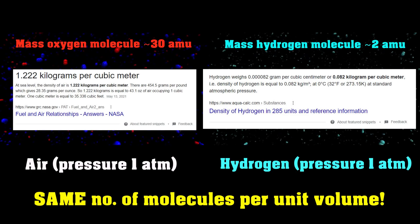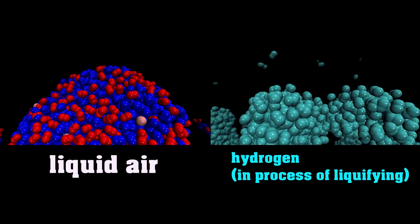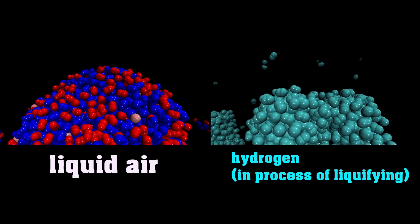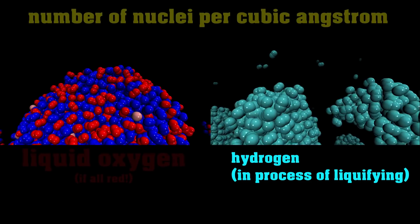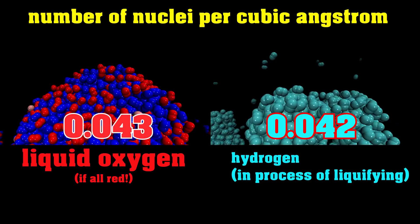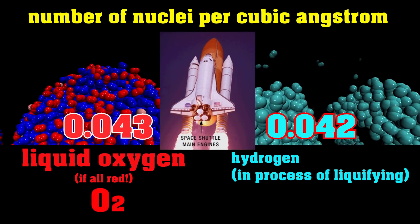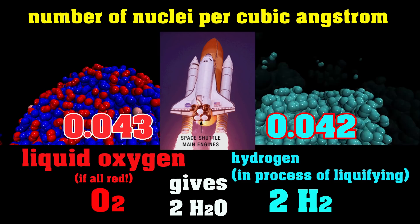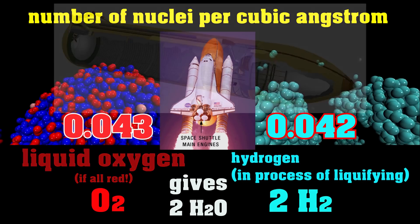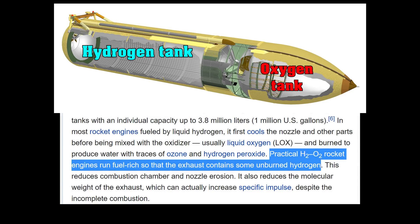Now comes the neat bit. What happens if we cool this down to liquify it? Well, then hydrogen looks like this at about minus 250 degrees Celsius and liquid air like this at about minus 200. And if it looks kind of samey, it's because they are. If you do the calculations for the number of nuclei per unit volume, cubic angstrom in this case, both liquid oxygen and liquid hydrogen are basically identical. That would mean that if we had a device that burned liquid oxygen and liquid hydrogen, because we need two hydrogens to burn one oxygen, this tells us that the hydrogen tank should be about twice the size of the oxygen tank, which is pretty much what we find.